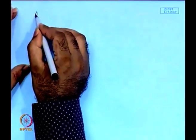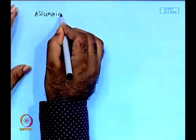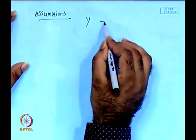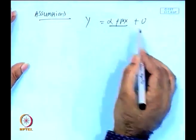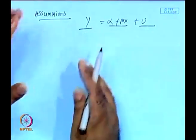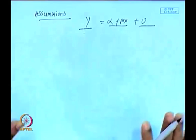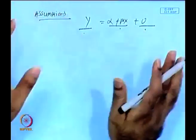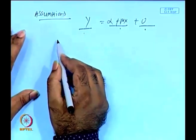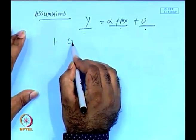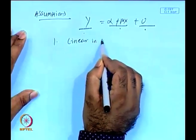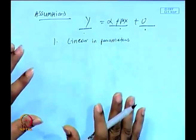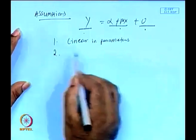For the model y = α + βx + u, we have three parts: total variation, explained variation, and unexplained variation. The assumptions relate to each component and the overall fitness of the model. The first standard assumption is that the model must be linear in parameters — α and β are represented in linear form without any problems.